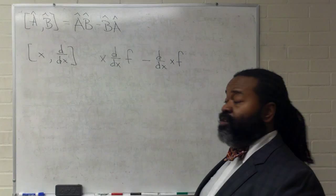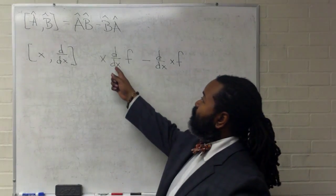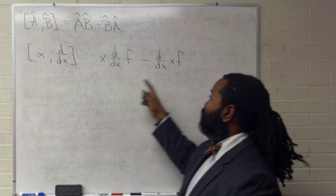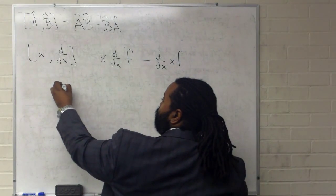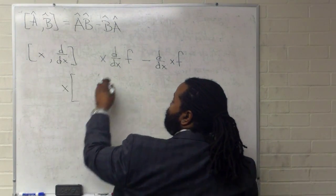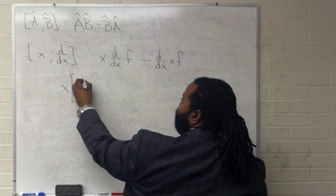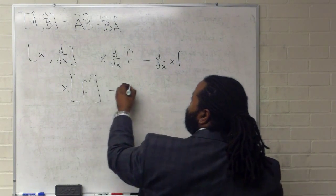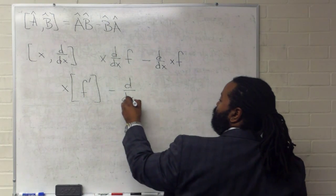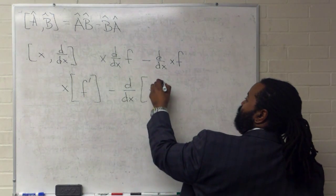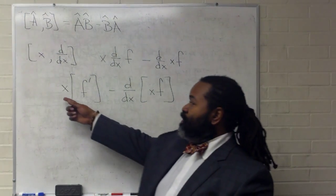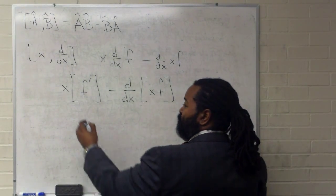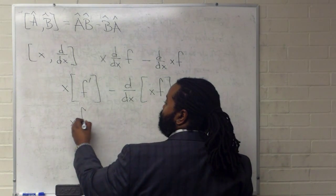So now we'll evaluate first B acting on F and then A acting on F. So for right now, operator A sits out to the side. First derivative of F is F prime. D dx. This simply multiplies the function. So this is just going to multiply. So we'll have X times F prime.